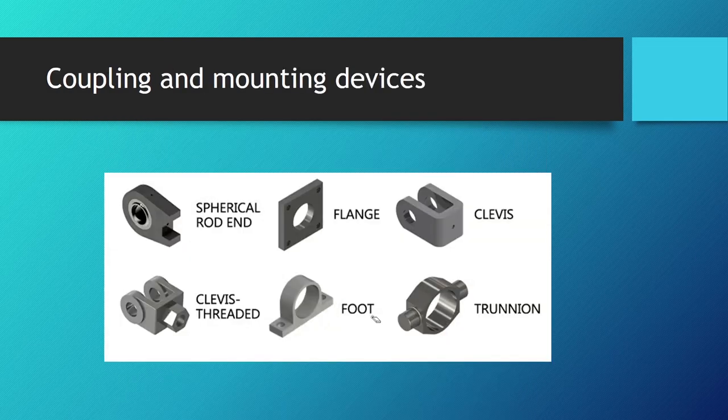Because some cylinders don't have the feet for mounting on their casing, we have to use these mounting devices from the picture. The spherical rod end is used for connecting the rod end of the cylinder, and there is a bearing here in the center, so the connection has one degree of rotational freedom. The flange, the threaded clevis mount, the foot mount, and the trunnion mount.